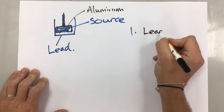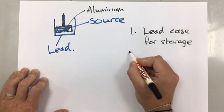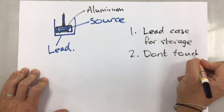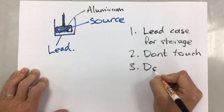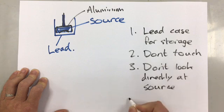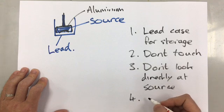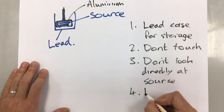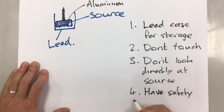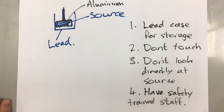So number one, lead case. Number two, don't touch. Number three, don't look at it. And number four, every person, every school or every facility that has radioactive sources has to have a trained professional. So you need safety professional training. And that is how we keep ourselves safe from radiation.